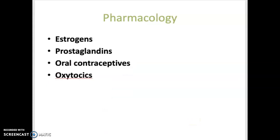Finally, pharmacology: estrogens are used for hormone replacement therapy to treat the symptoms of menopause. Prostaglandins terminate pregnancy. Oral contraceptives are hormones used to prevent pregnancy. Oxytocics induce labor by increasing the strength and frequency of uterine contractions.